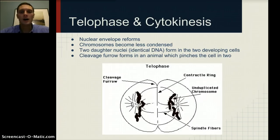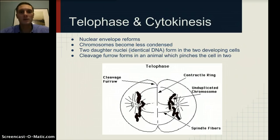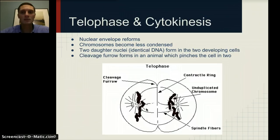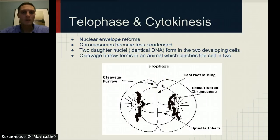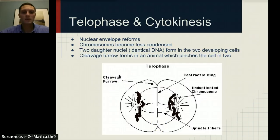In telophase and cytokinesis, the cells are finishing division and splitting from one another. The nuclear envelope begins to reform and re-surround the DNA. Chromosomes become less condensed and begin to unwind. We begin to see two daughter nuclei forming on either end of the cell. The cleavage furrow forms in animal cells, which pinches the cell in two, resulting in two separate daughter cells.